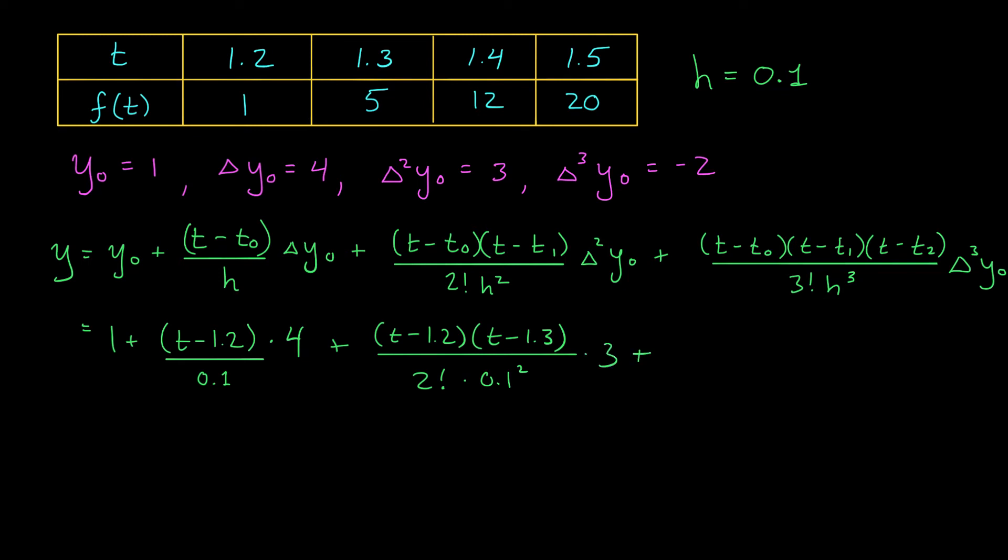And finally the last term, I have t minus 1.2, t minus 1.3, t minus 1.4. I divide by 3 factorial, times h cubed, that's 0.1 cubed, and I multiply by my last forward difference, minus 2.